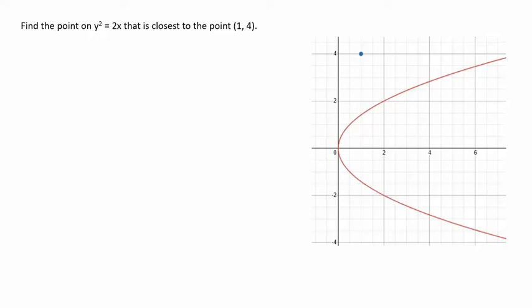In this video, we're going to look at an optimization problem. The problem is to find the point on the graph of y squared equals 2x that is closest to the point (1, 4).